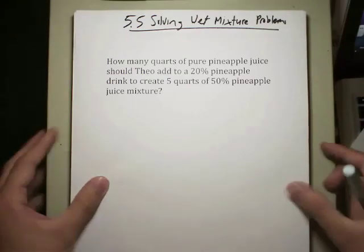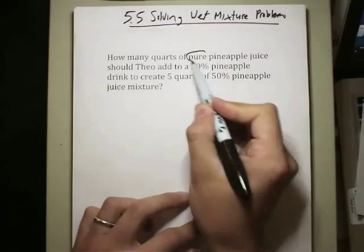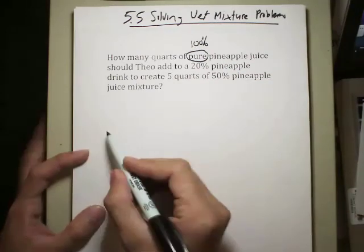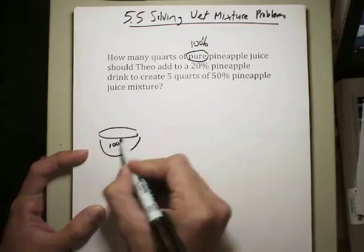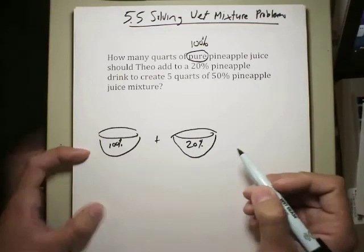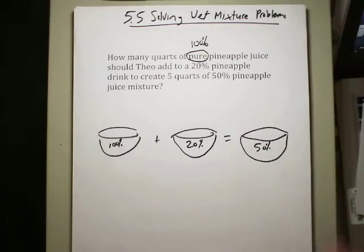The problem is as follows: how many quarts of pure pineapple juice should Theo add to a 20% pineapple drink to create 5 quarts of 50% pineapple juice mixture? I think mixture problems make a lot of sense because you have two different things, you mix them together to form a brand new thing and you can see it here. First of all, I want to clearly point this out to you, the word pure. The word pure means 100%, it always means like that, pure means 100%. So if you can actually clearly label your mixtures, that would be great.